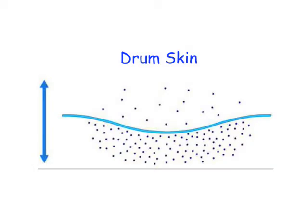On a drum, if the skin is loose, when you hit it, the vibrations will be greater and slower, producing a louder sound — a sound of a higher intensity. But if the skin is tighter, when you hit it, the vibrations will be smaller and much quicker, producing a sound with a higher pitch.